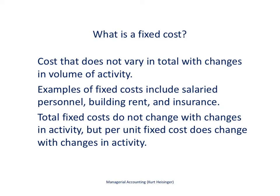Fixed costs do not vary in total — they stay the same with changes in volume of activity. They do change on a per unit basis, but not in total. Examples of fixed costs are salaried personnel, building rent, and insurance. For example, a production manager paid $50,000 a year receives that salary regardless of whether we produce one mountain bike or 100 mountain bikes. That salary is a fixed cost.